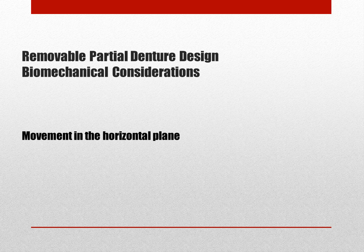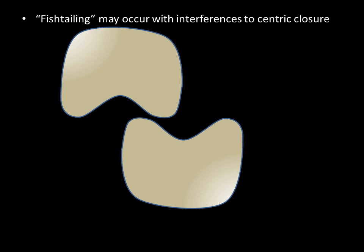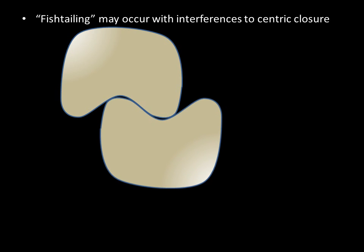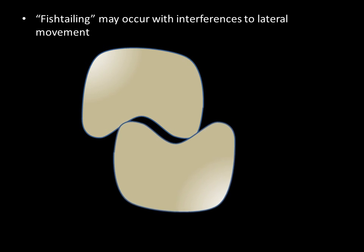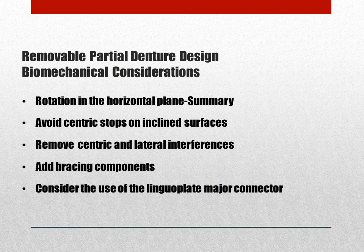Movement in the horizontal plane is most easily described as fishtailing, as seen in the illustration. This movement may be difficult to detect clinically, but microluxation of the abutment over a period of time, especially with premolars, can cause premature loss of the abutment. This motion may occur whenever a patient closes, especially if there are interferences to closure or lateral movement of the mandible. The addition of extra bracing in the form of plating may help distribute forces due to fishtailing. Interferences to centric closure and lateral movement must be carefully evaluated and eliminated. Centric stops should be present on flat surfaces.